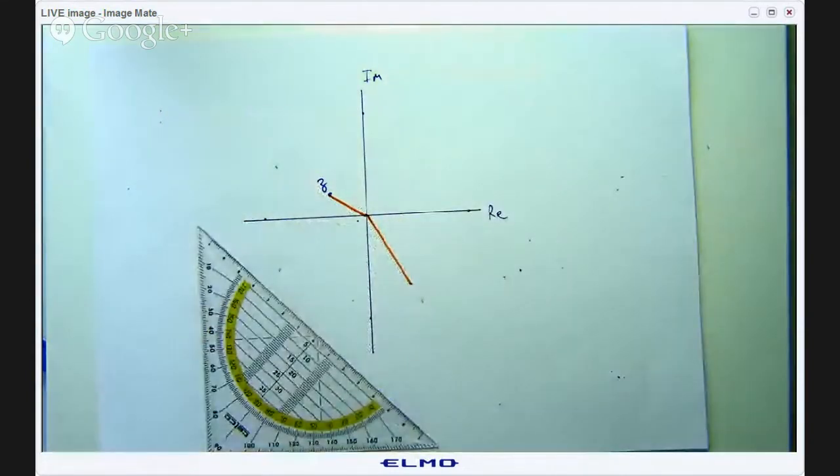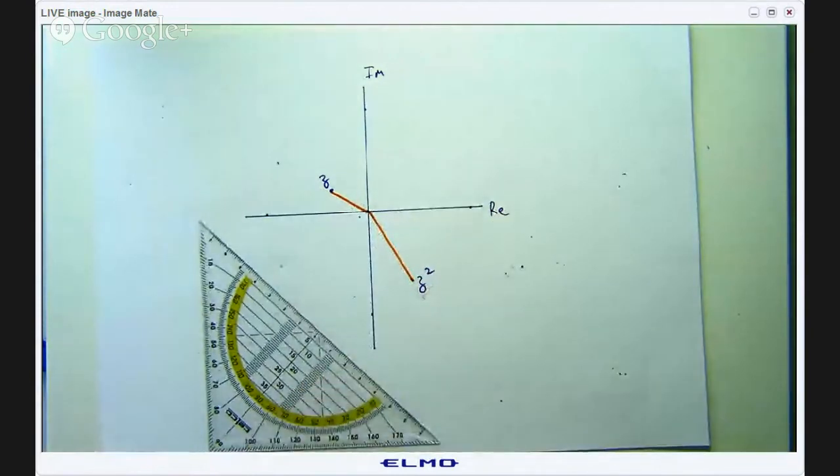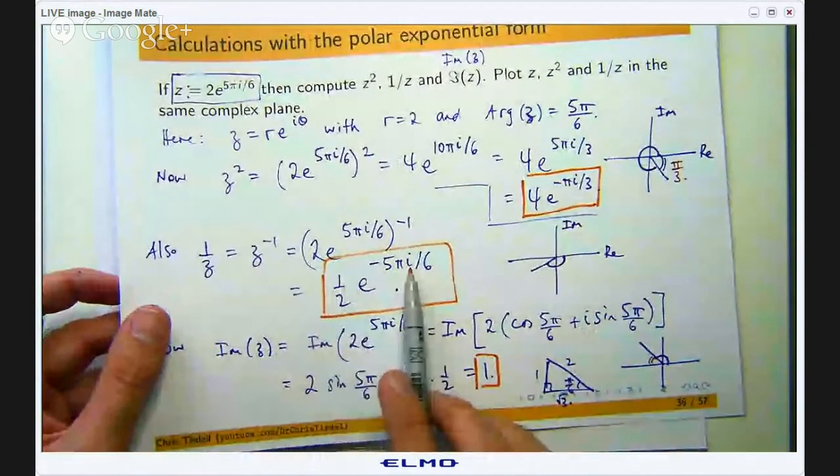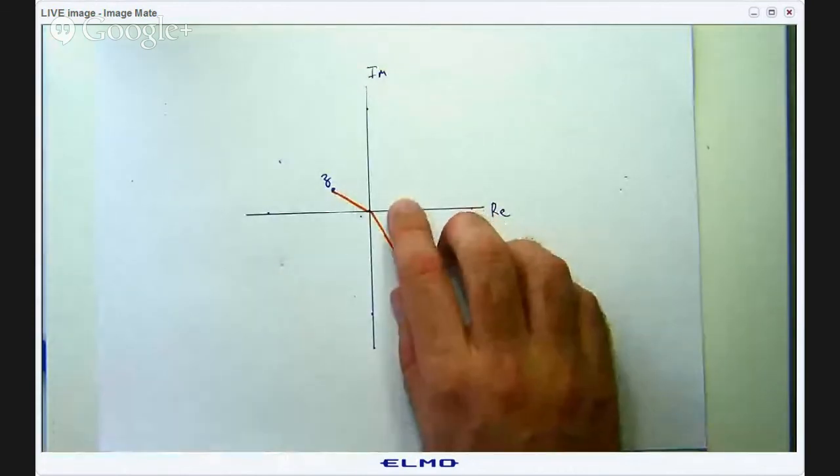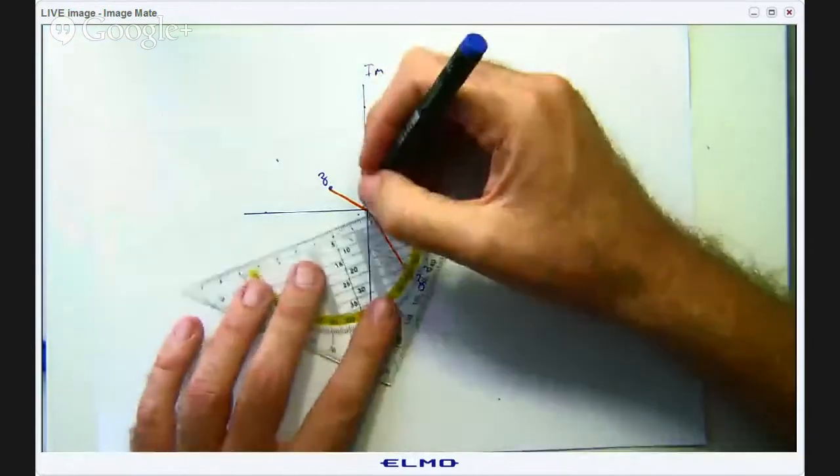Okay so that's going to be z² and 1/z, 1/2 unit out and -5π/6 in the anticlockwise direction. So that's going to go out here and it's going to only be 1/2 unit from the origin.